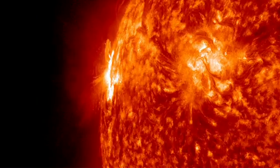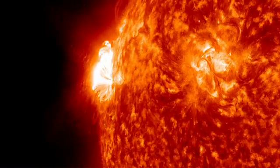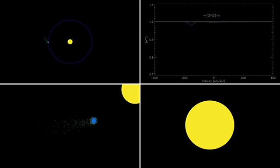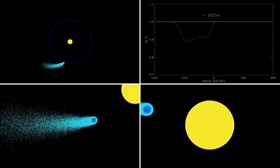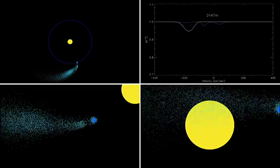Similar flares happen frequently on the Sun. But because the planet is so big and so close to its star, this X-ray blast had an outsized effect, heating the planet's atmosphere and sweeping away 1,000 tons of gas each second.